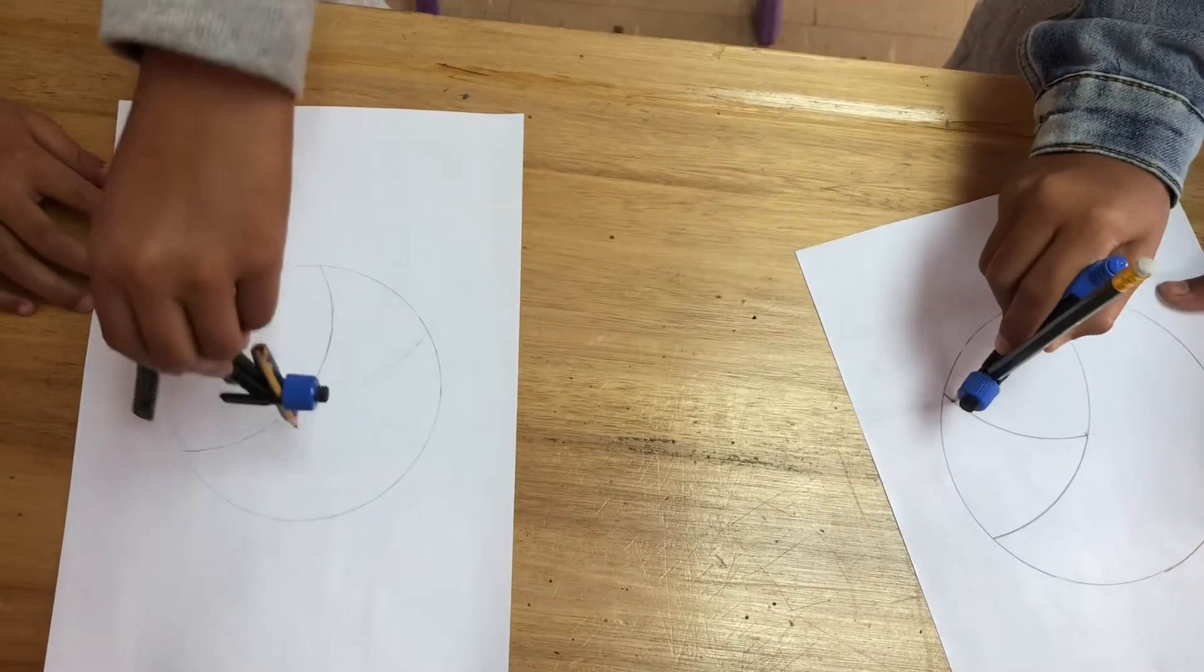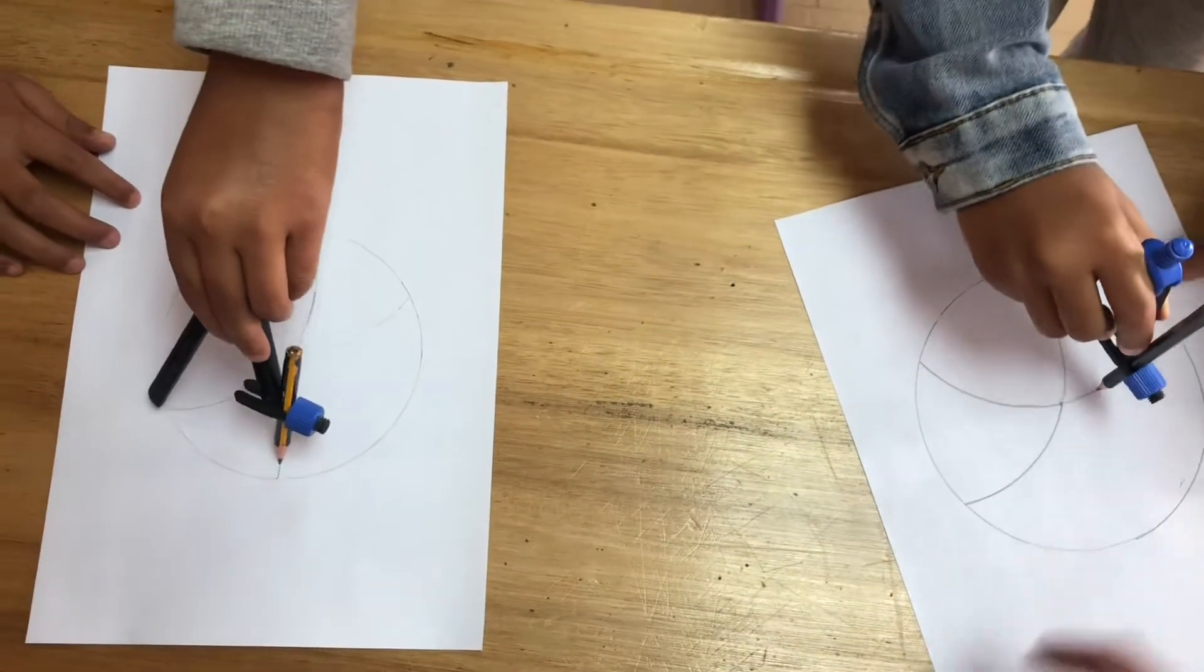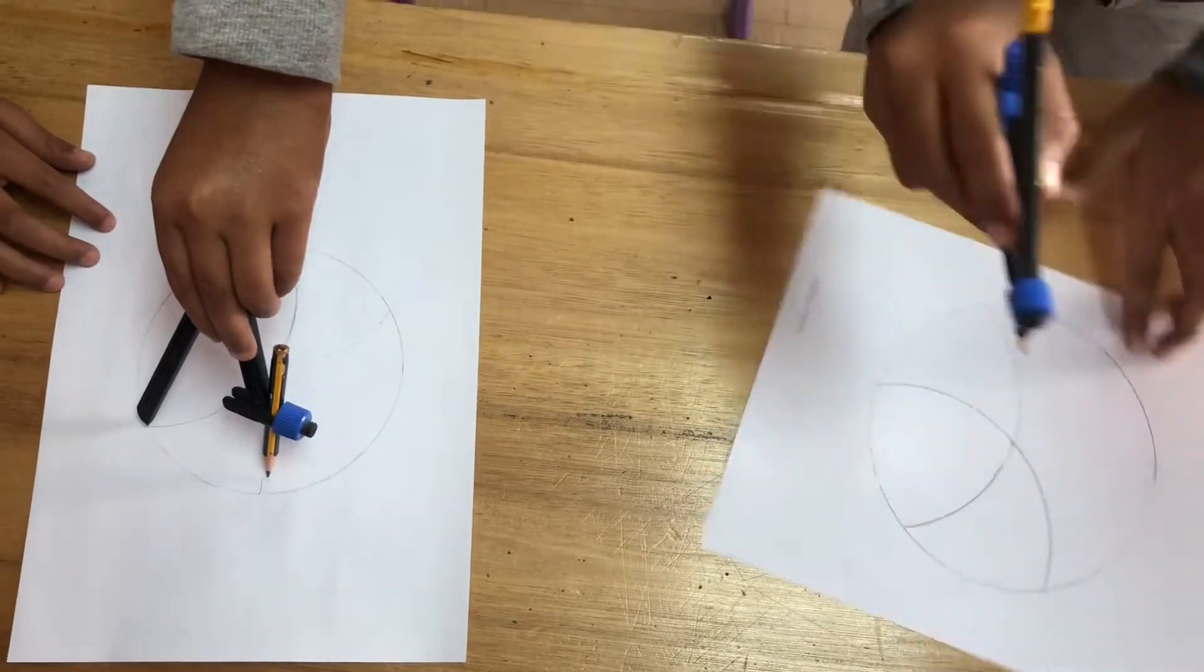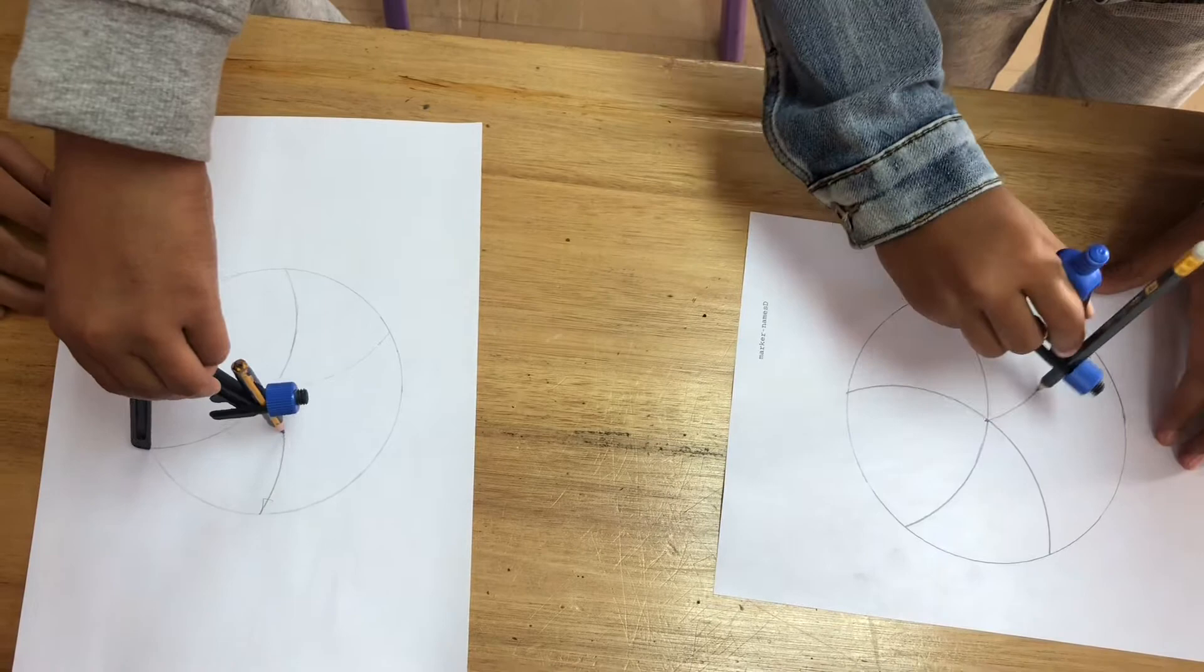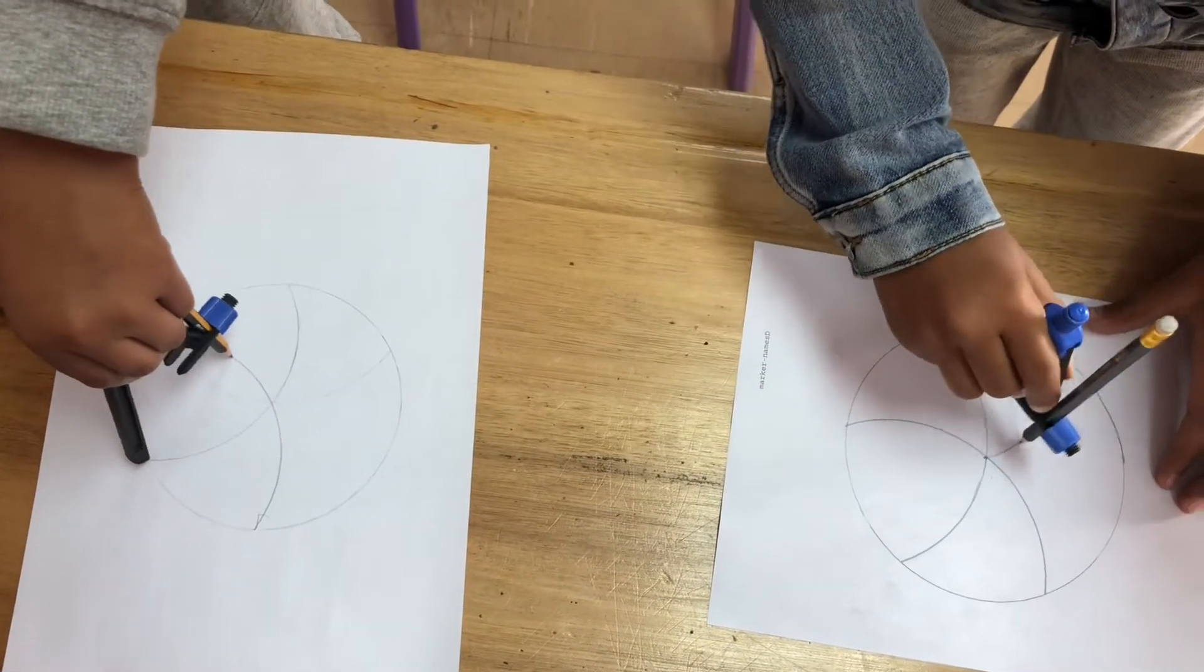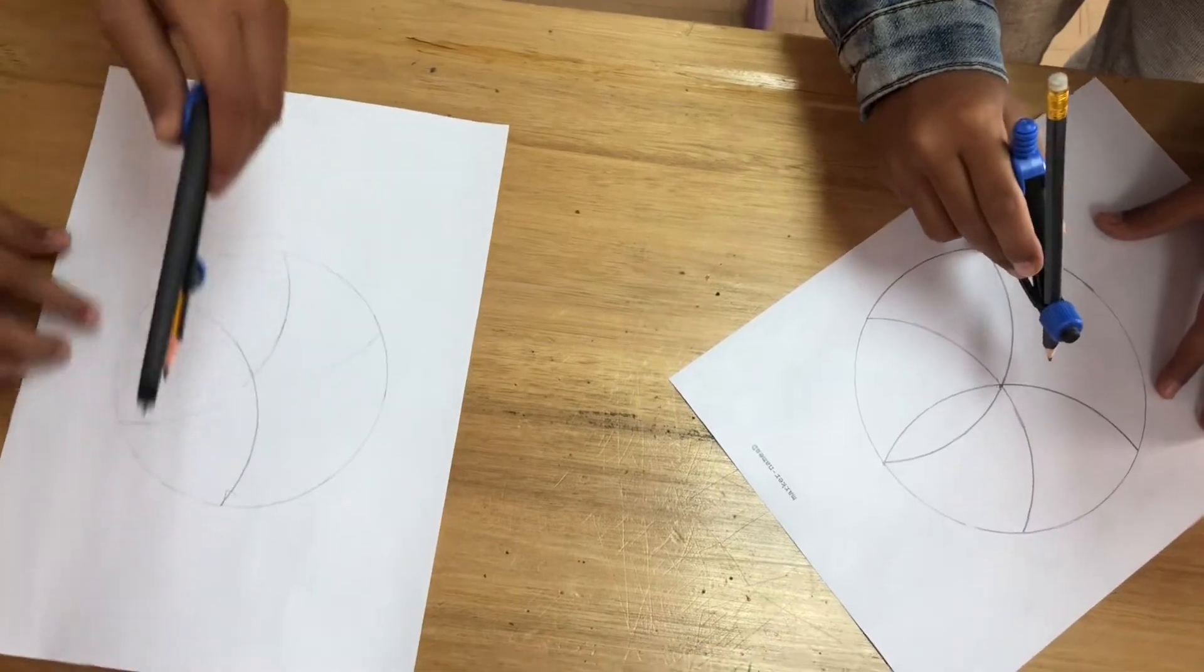And then you keep repeating that. And then you go to the next one. And you want to go all the way to the circumference there. You're going to keep spinning that compass. Make sure the compass and the pencil are sharp and they meet. Okay.